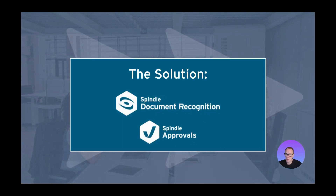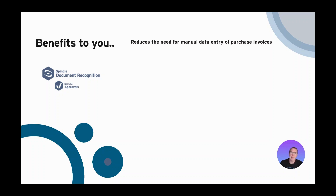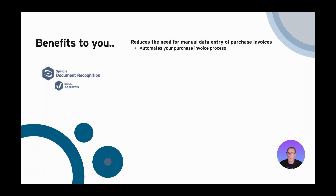At Dracer, we've come up with a solution to automate and put a lot of efficiency around this process — that's our Spindle Document Recognition and Spindle Approvals solutions. The key benefit is it reduces the need for manual data entry when entering purchase invoices and automates as much of the process as possible. If I've got, say, 100 purchase invoices to process, what I'm really looking for is the ones that don't match my purchase order and the ones that don't match my goods received notes — I'm looking for the exceptions, not processing every single invoice manually. Using document recognition, I can automate as much as possible and just focus on the exceptions that need my attention.